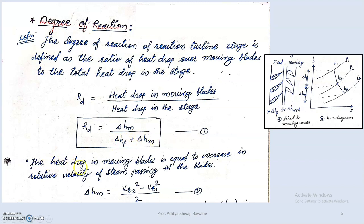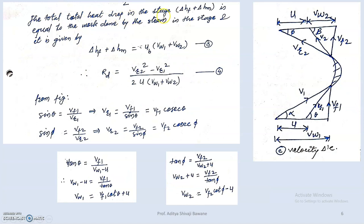The heat drop in the moving blade equals the increase in relative velocity of steam passing through the blades: ΔHm = (Vr2² − Vr1²) / 2, per unit kg. The total heat drop in a stage is ΔHf + ΔHm, which equals the work done in the stage — from the impulse-momentum equation: ΔHf + ΔHm = U(Vw1 + Vw2). So Rd = heat drop across moving blade divided by heat drop in the stage.